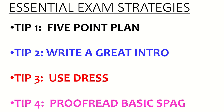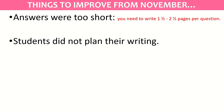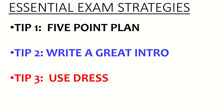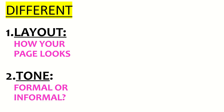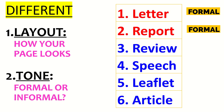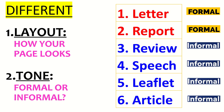Everything is very similar across the six text types — we're going to use the same techniques. The only real difference is how the page looks. For example, an article, review, and leaflet would have a heading and subheadings, whereas a speech doesn't. Formality and tone also differ: the letter and report are more formal and usually aimed at people in positions of power, while the other four can be quite informal and aimed at peers.